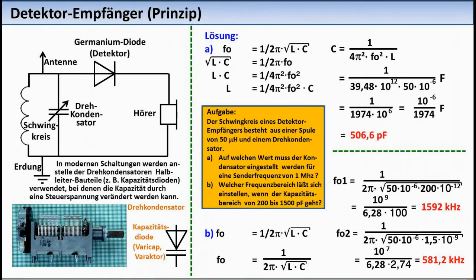In this task example, the well-known formula for the resonant frequency of a resonant circuit is used at the end. You rearrange the formula either for C or for F0, and thus obtain the solutions for A and B.